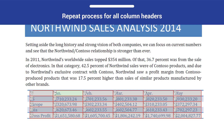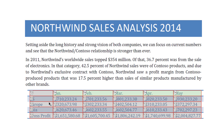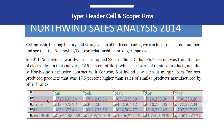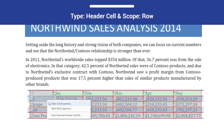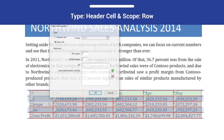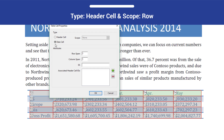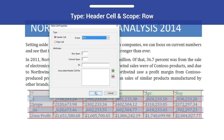This particular table also has row headers and you will need to call them out as well. You can follow the same process with one small difference. From the Scope drop-down menu, you would select Row and then select OK.